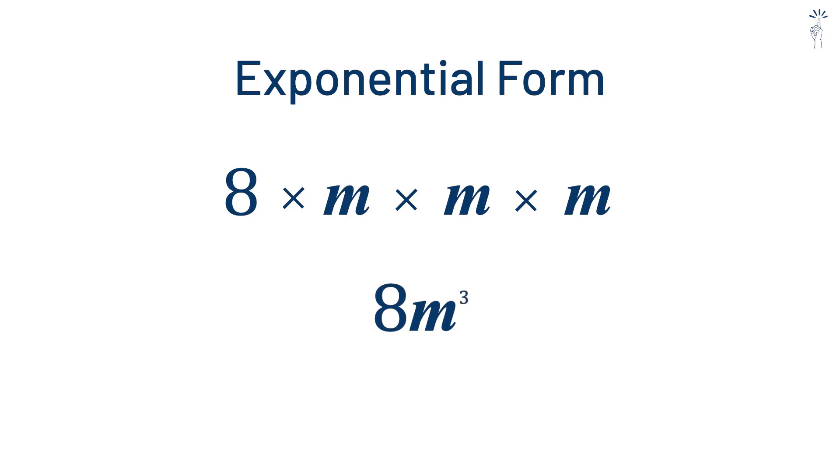Notice the difference. m to the power of three means m is multiplied by itself three times. 8m to the power of three means that result, the coefficient multiplied by the power.